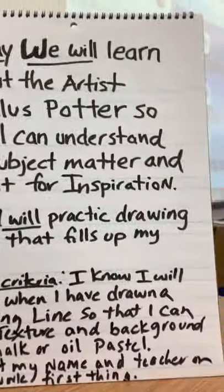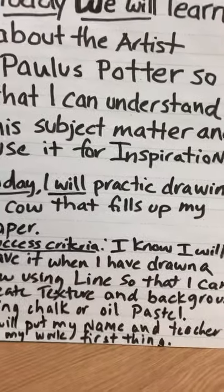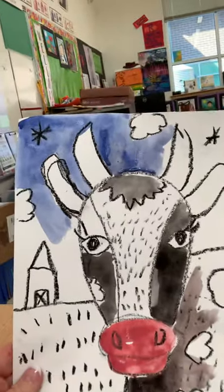I know I will have it when I have drawn my cow using line so that I can create texture and a background with chalk. I will put my name and teacher on it first thing. Now you are going to need a couple of things, so let's get started. You're going to need a paper. You are going to need to make a meatball — that's a funny word I use for a little piece of paper all clumped up, because this is hard to get off your fingers sometimes.